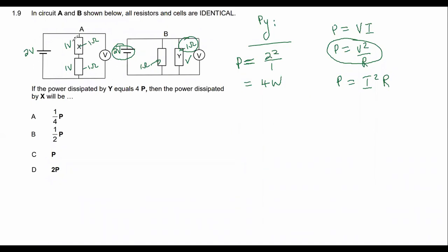Okay. So if we're to go calculate, so we now know the voltage and we know the resistance for that one. So we could work out the power of X by using the V squared over R formula, and that would be one squared over one, which is just equal to one watt.